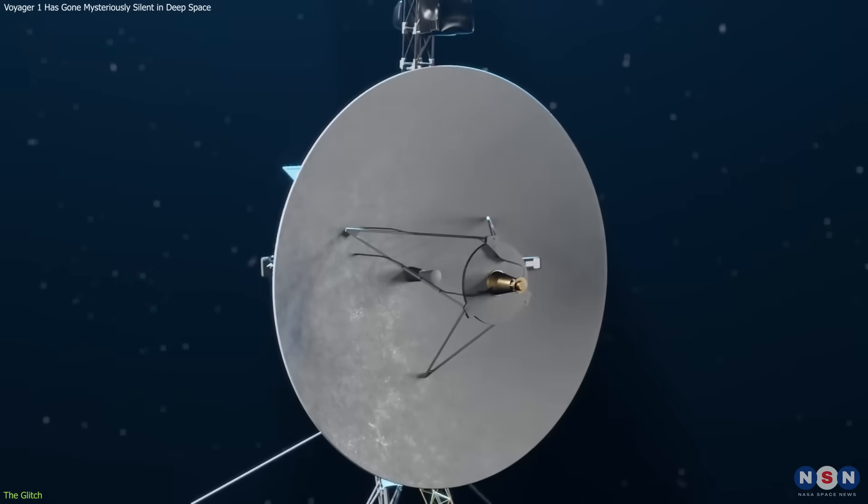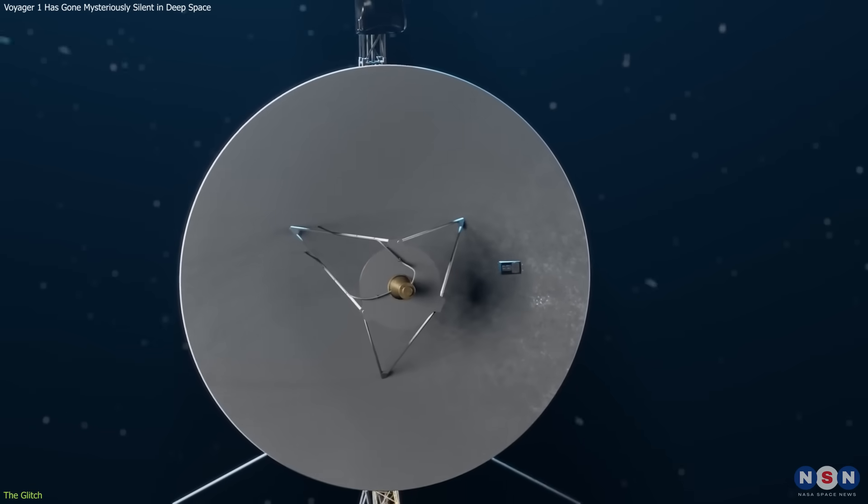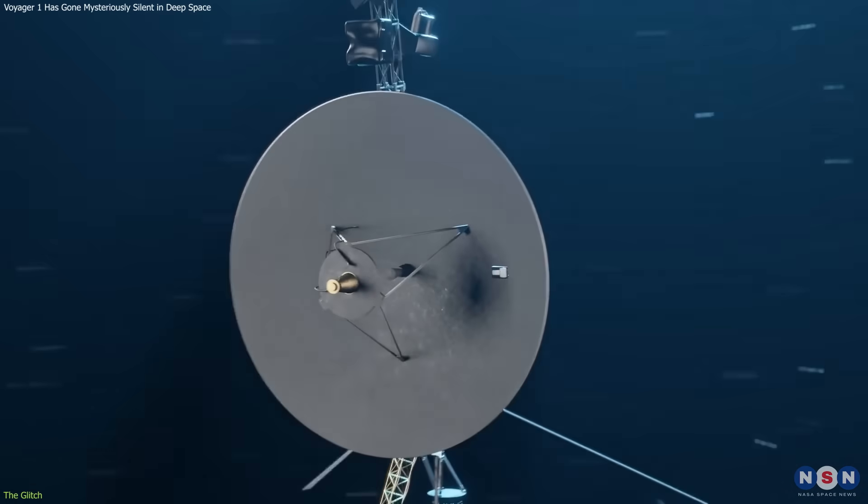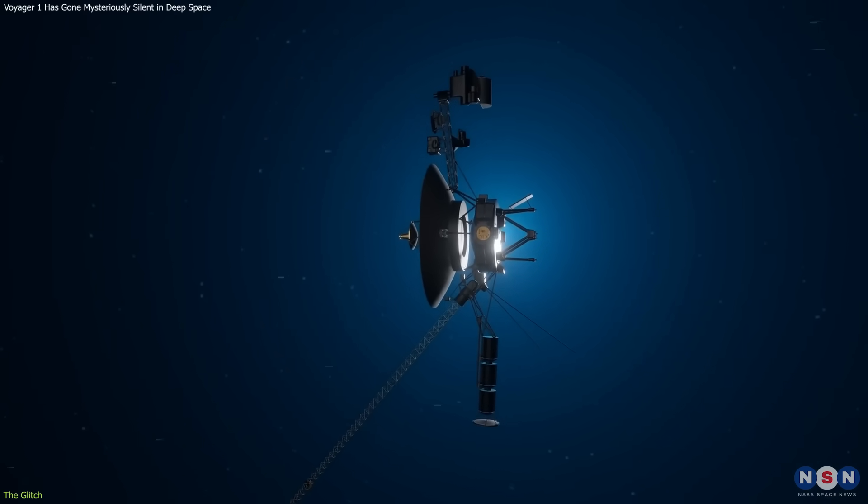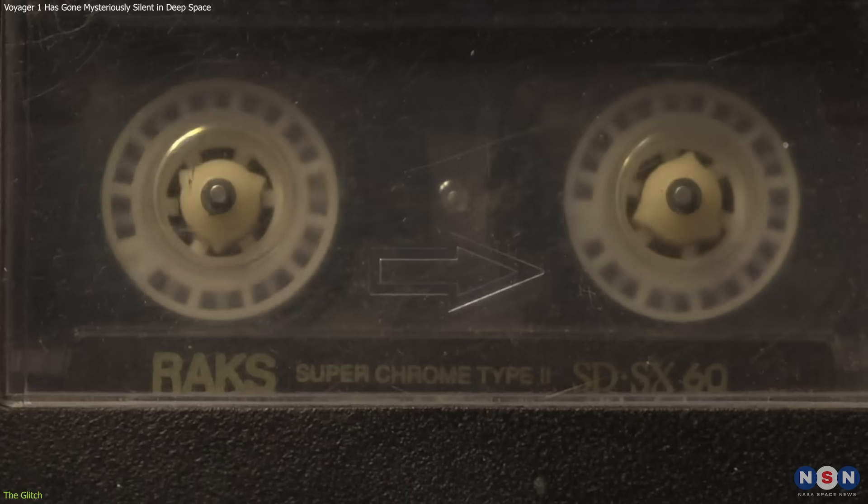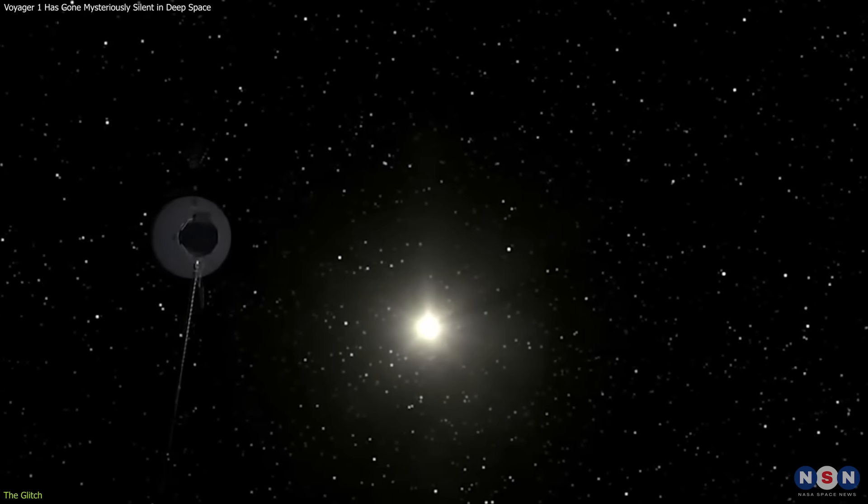This glitch is not the first one that Voyager 1 has encountered in its long journey. In fact, it has faced several glitches in the past, such as a stuck thruster, a faulty tape recorder, and a power outage.